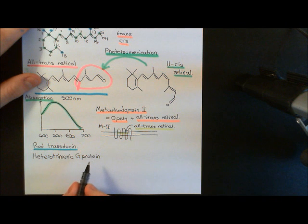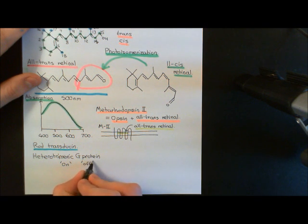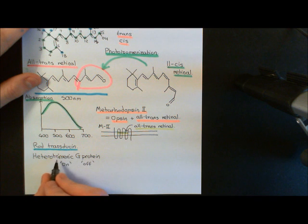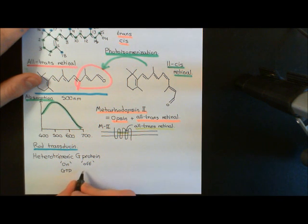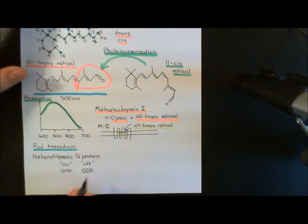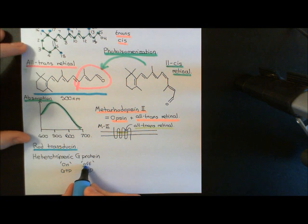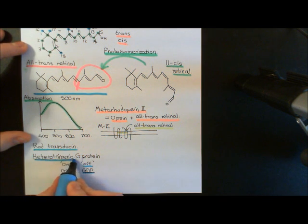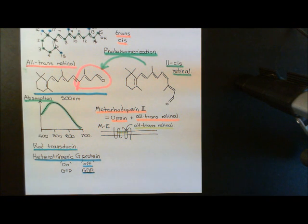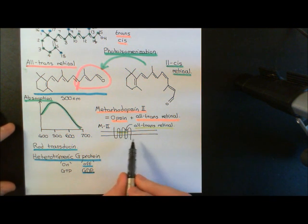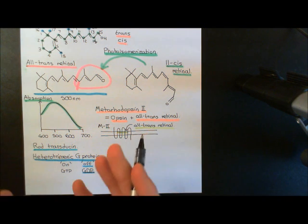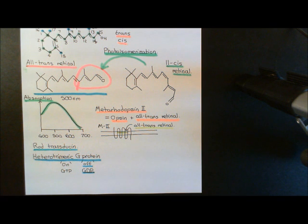This protein can be in two different states: an on state and an off state. In the on state, the heterotrimeric G-protein is split into two separate portions and the alpha subunit has GTP bound to it, whilst in the off state it's all bound as a trimer and the alpha subunit has GDP bound to it. We will start off discussing transducin in the off state, and of course what's going to happen is the metarhodopsin-2 is going to activate it and turn it into the on state. The off state rod transducin protein is actually attached to the rhodopsin protein, so it's very nearby, ready for the metarhodopsin-2 to activate it.